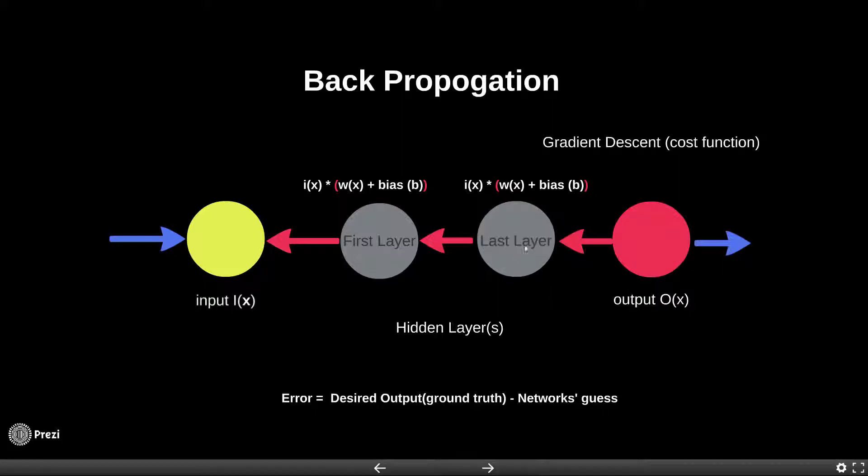Each of these hidden layers has its own set of neurons, and each of those has its own set of weights and biases. Each layer also will have its cumulative error score.